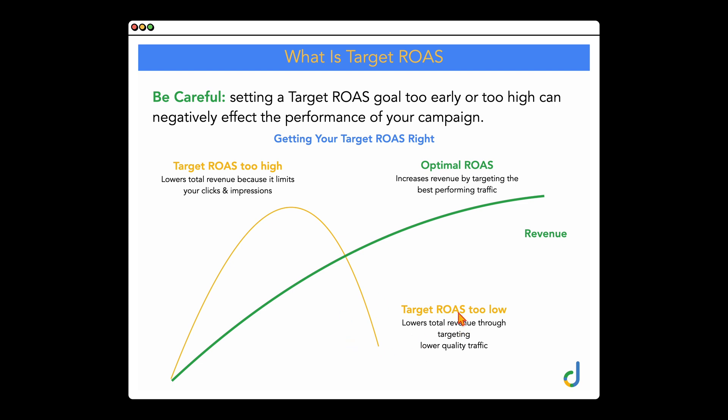If you set your target ROAS too low—say your target is at 200% but your account is actually achieving 500% ROAS—Google will just take it that you're happy with the 200% ROAS and start targeting more traffic and more conversions at that lower level. That's why getting this right is so important: too high lowers impressions and clicks; too low and you're just going to be getting junk traffic that isn't targeted for your products or services.